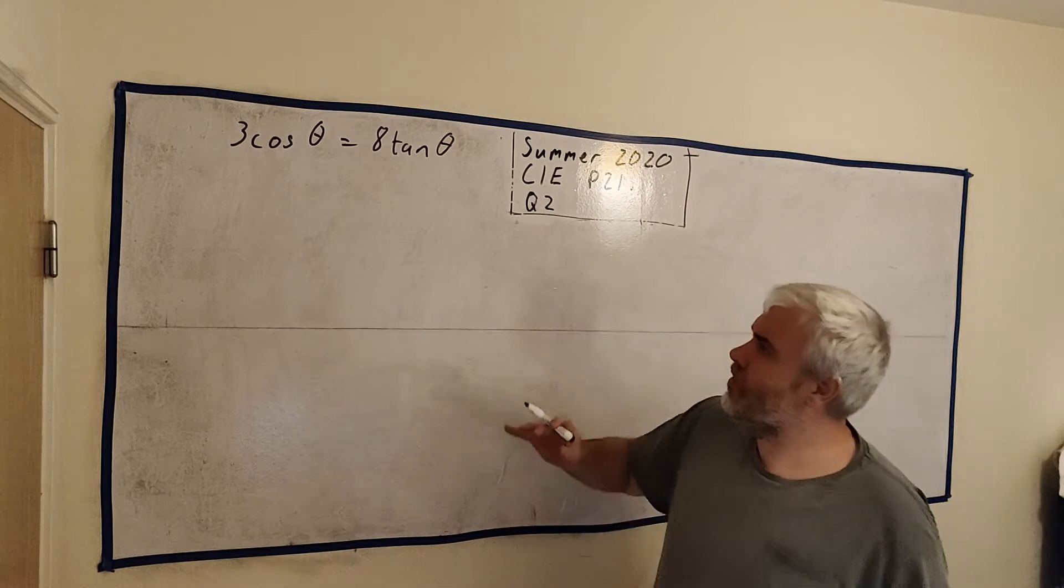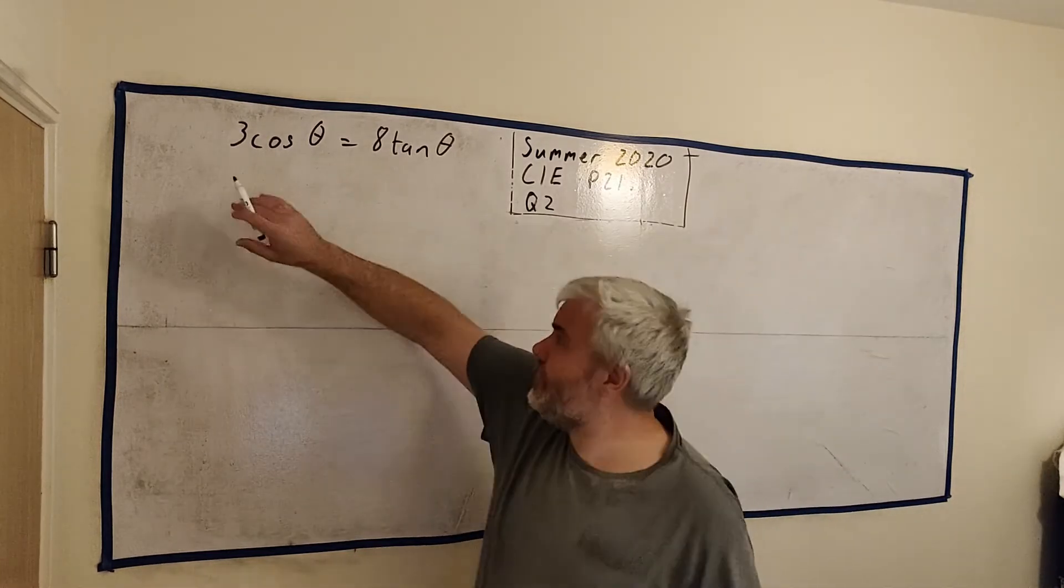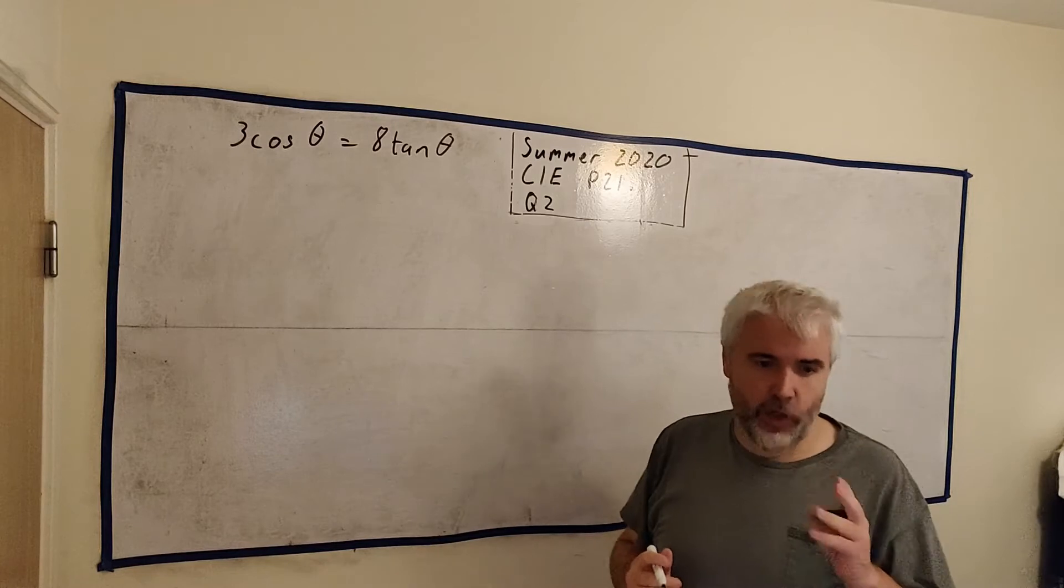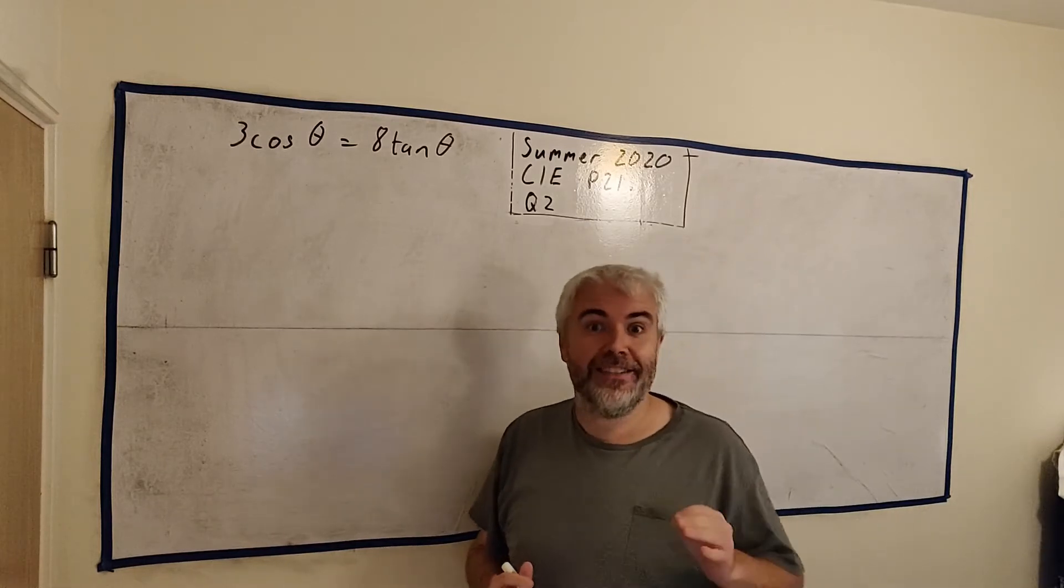Part A of this question asks us to express this equation, 3 cosine theta equals 8 tan theta, as a quadratic equation in sine theta.